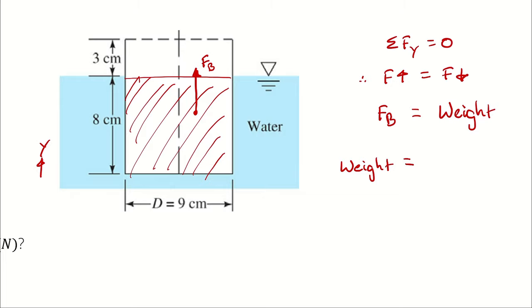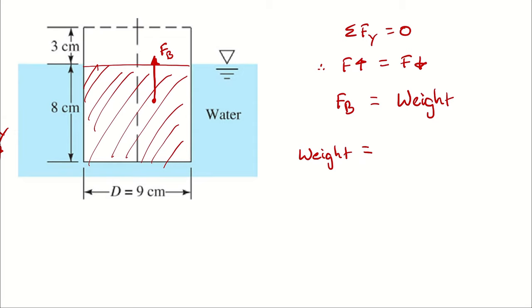Therefore, the weight of this can is going to be equal to the volume of this cylinder of water multiplied by the density of water to get the mass of the water displaced multiplied by gravity.